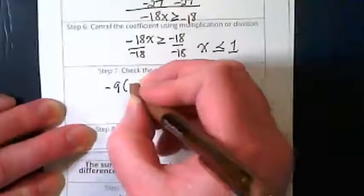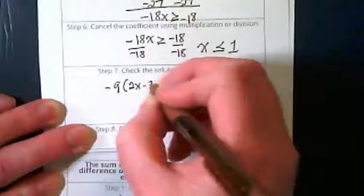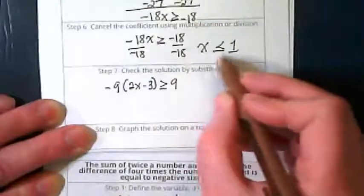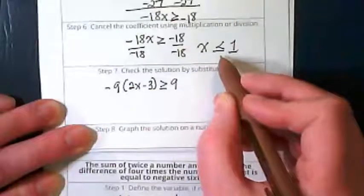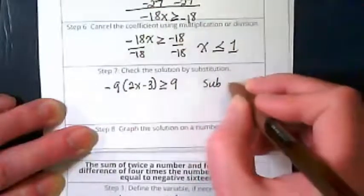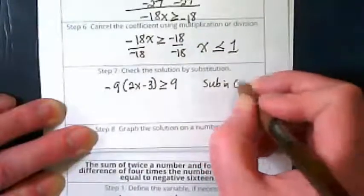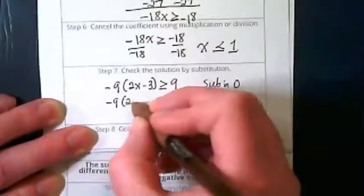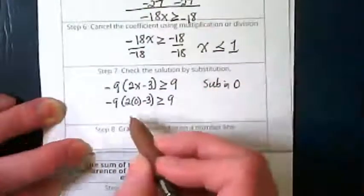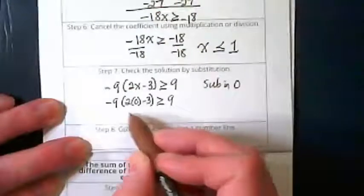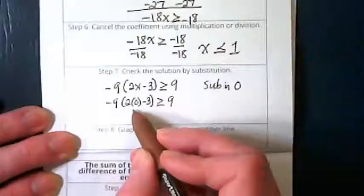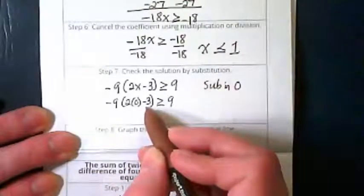Let's go back to negative 9 times 2x minus 3 is greater than or equal to 9. We're saying x is less than or equal to 1, and since 0 is less than 1, I can use the 0 to sub in. Negative 9 times 2 times 0 minus 3 is greater than or equal to 9. Solve inside the parentheses first. 2 times 0 is going to be 0, leaving us with what inside the parentheses?